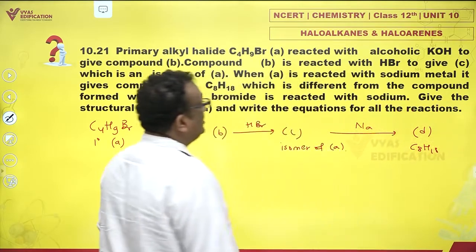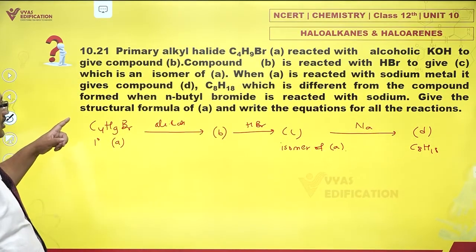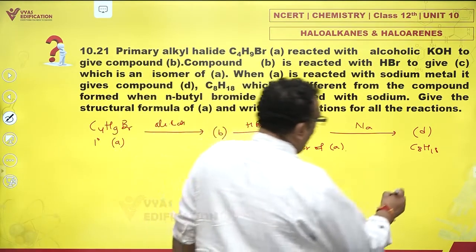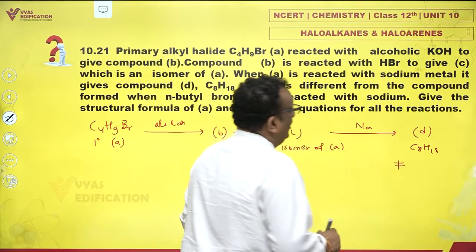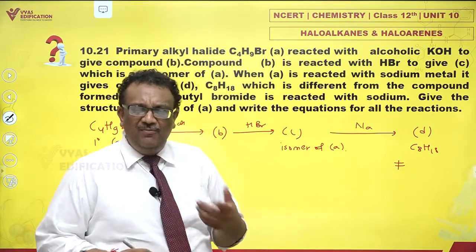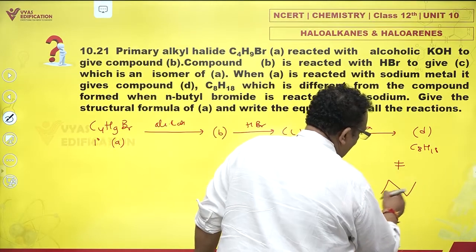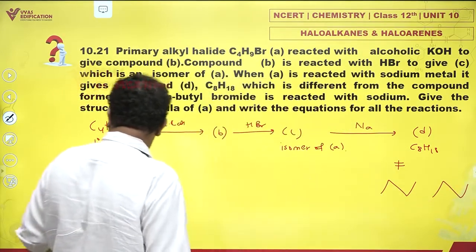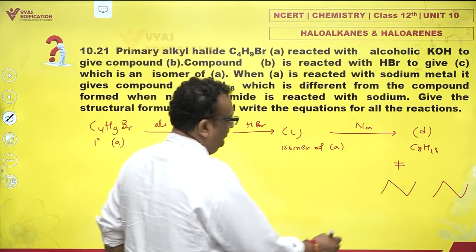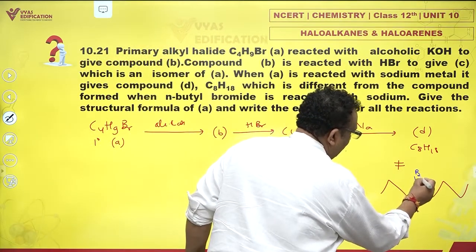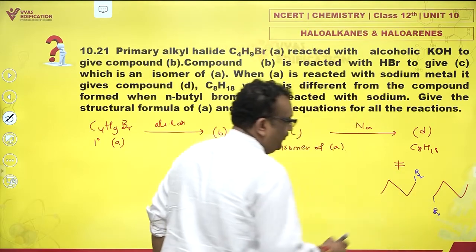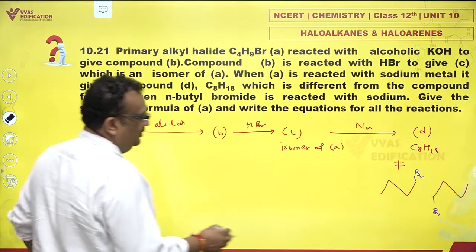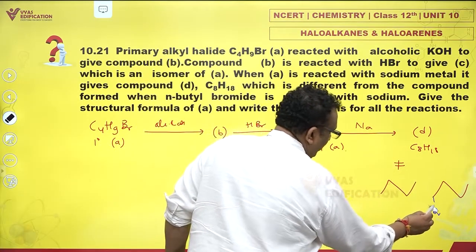C8H18, which is different from the compound when n-butyl bromide is reacted with sodium. So this is not equal to n-octane. Now if I react n-butyl bromide with sodium, see this is butyl, n-butyl bromide would mean that I have Br and Br here. And if I make it undergo reaction with sodium, it means that these bromines would be removed.